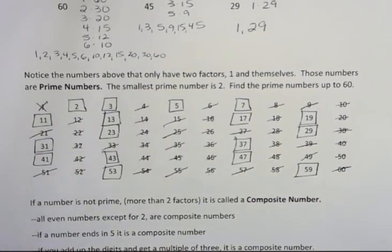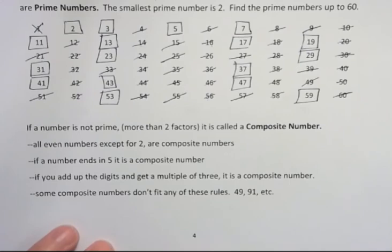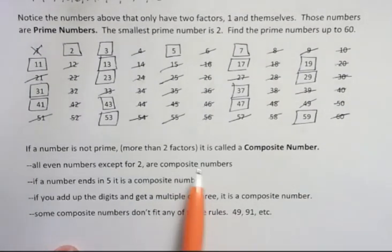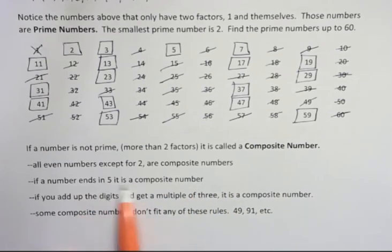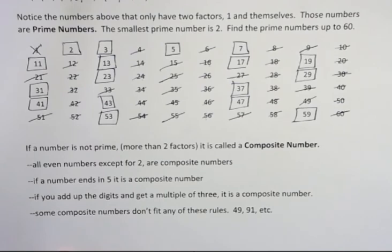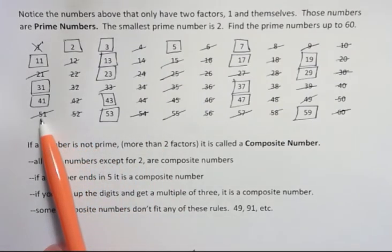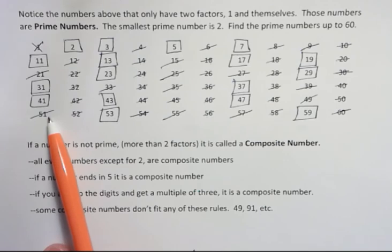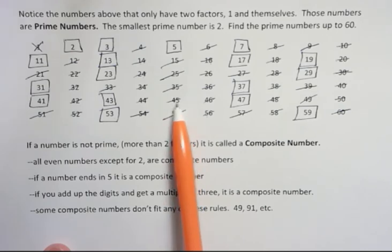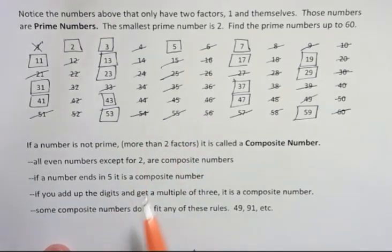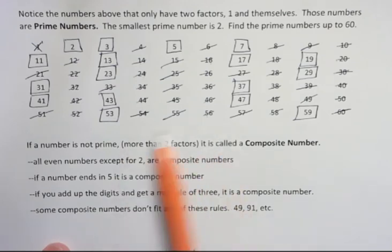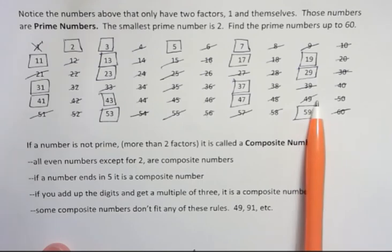And again, if anything is not prime, then it has more than two factors. So it's composite. And remember that all even numbers are composite because 2 goes into that. If a number ends in 5, it's a composite number because all those are divisible by 5. If you add up the digits and get a multiple of 3, it's a composite number. For example, 51. 5 plus 1 is 6. 3 goes into 6, so 3 goes into 51. What's another one? 4 plus 5. 4 plus 5 is 9, so 3 goes into 45. So add the digits, and if you get a multiple of 3, then you know 3 goes into it. Some of the composite numbers don't fit any of these rules like 49. They don't add up to 3. They're not even. They don't end in 5. But 7 has its own set of numbers that it cancels out.